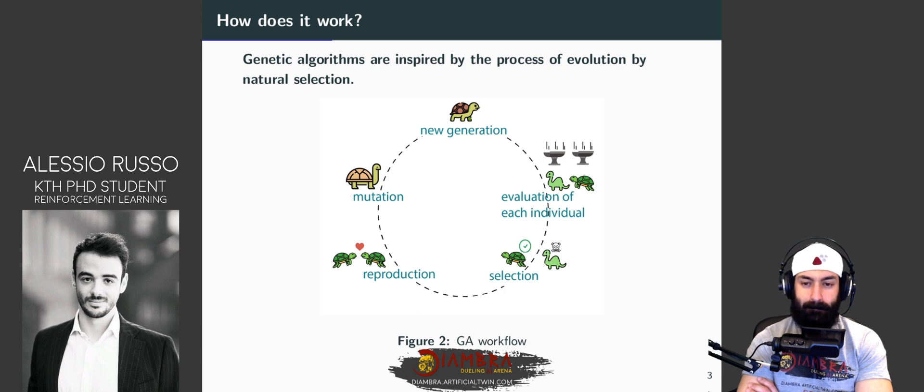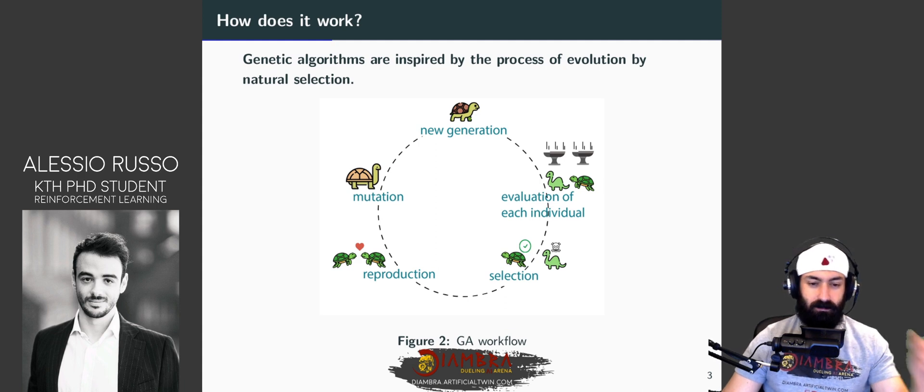What we do after we evaluate each network, we select which network is the best one. And amongst the best networks, we mix them together. This is called the reproduction or crossover.